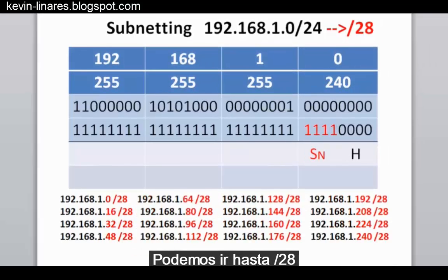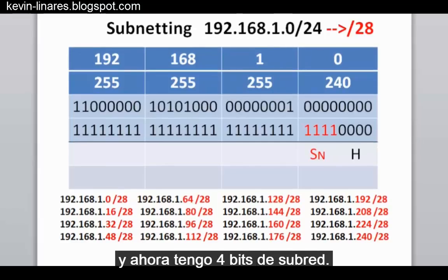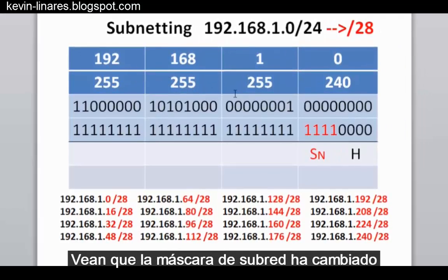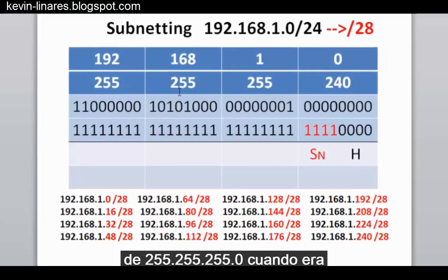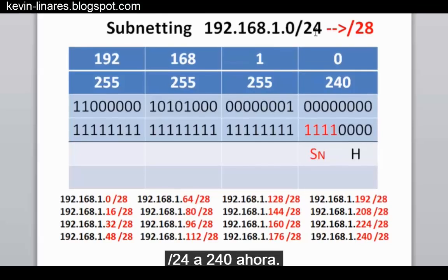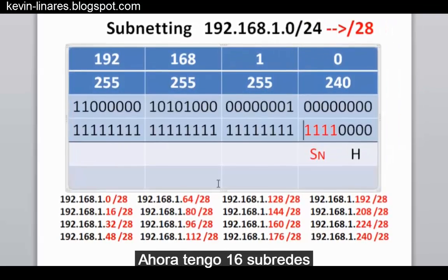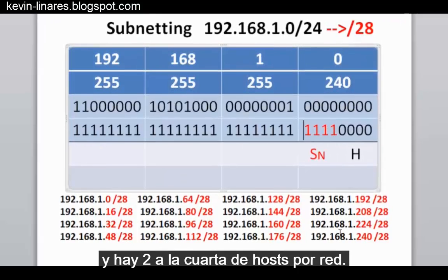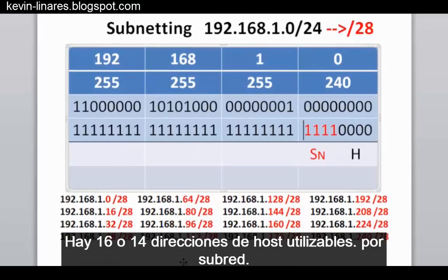Going up to slash 28 means borrowing four subnetwork bits. Notice that the subnet mask has changed from 255.255.255.0 at slash 24 to now 240. We now have 16 subnetworks, or two to the fourth power, and two to the fourth power of hosts per network, so there are 16 or 14 usable host addresses per subnet.